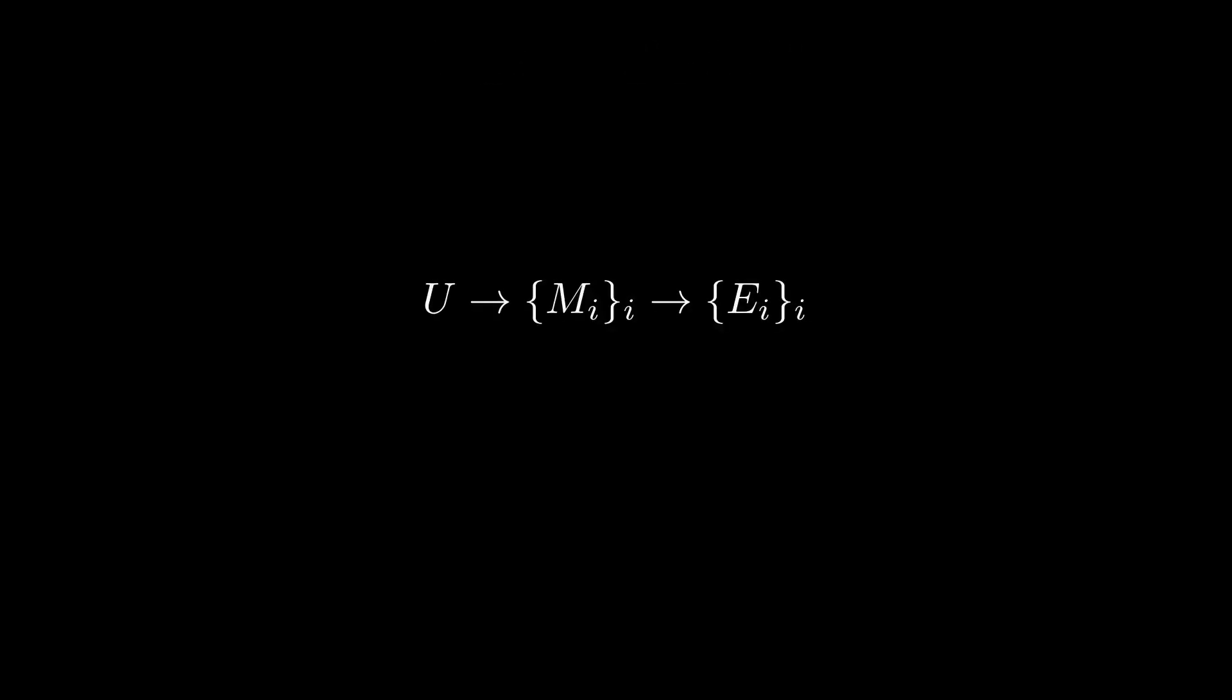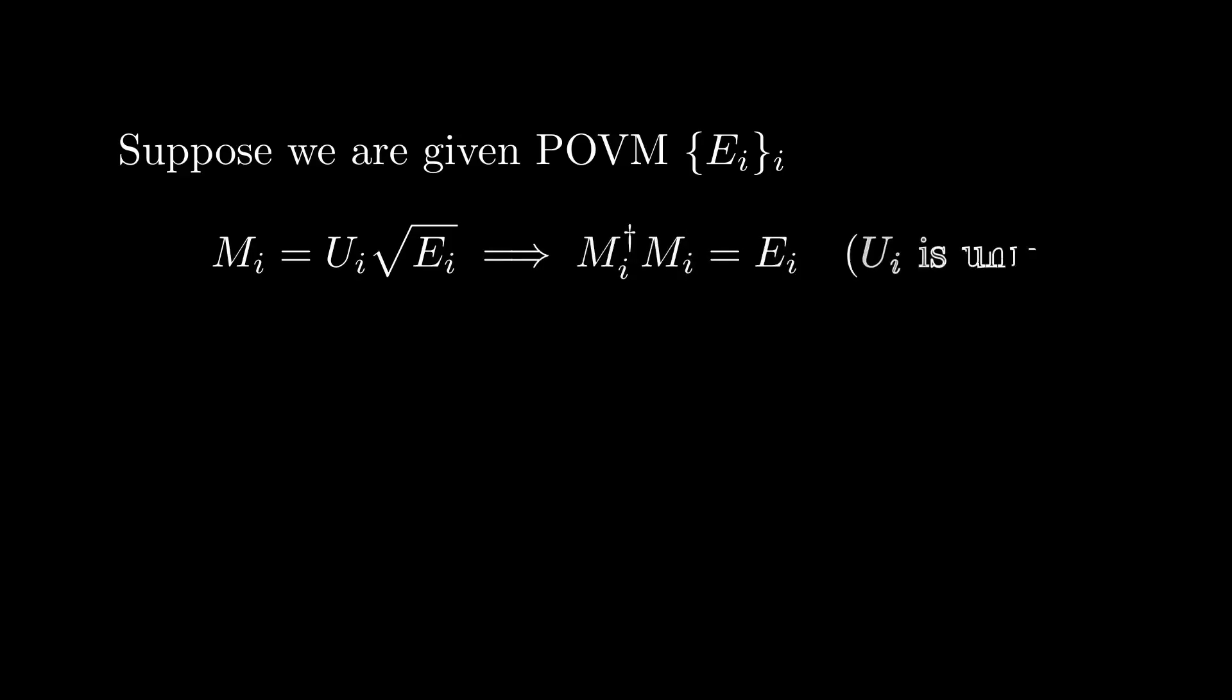We showed we can get a POVM by performing an orthogonal measurement on a pointer. However, we can also derive an orthogonal measurement from a given POVM as well. Suppose we are given a POVM defined by some collection of Hermitian PSD E_i operators that sum to identity. We can always define M_i equals U_i times the square root of E_i, where the square root is taken to be non-negative, such that M_i dagger M_i equals E_i, where U_i is an arbitrary unitary. This equation represents the polar decomposition of M_i. Substituting these M_i's into the mapping described previously then gives us the unitary that realizes the POVM we defined.